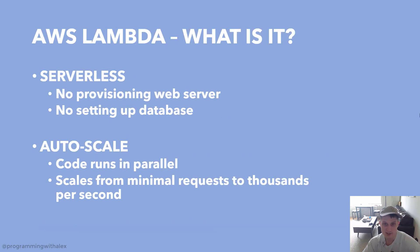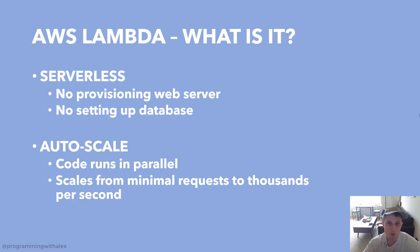So AWS Lambda — what is it exactly? If you've heard the term Lambda, you've probably heard the term serverless. It means that you don't have to set up a web server, a database, or anything to get a script running in the cloud. You just have to push the code and run it, and it gets working. This saves a lot on development time. It also auto-scales — when you're running the Lambda function, you can make multiple requests to it, and the code will run in parallel, automatically scaling from just a few requests to thousands.